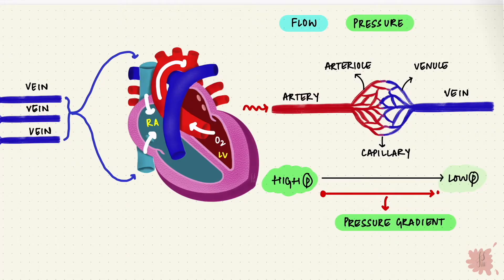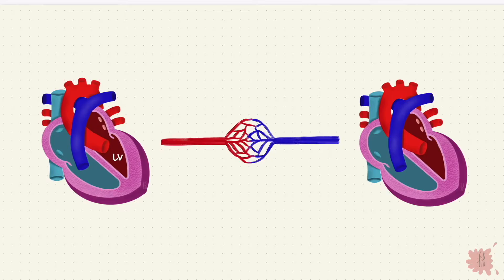During systole, when the ventricle contracts, blood from the left ventricle enters the aorta under high pressure. As blood flows through the arteries,